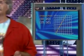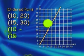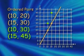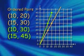At $3 a ride, 10 rides would be $30 and 15 rides would be $45. We can put those points on the graph and get a different line.